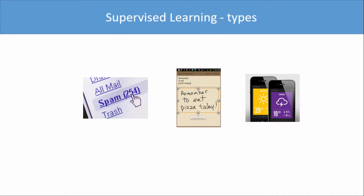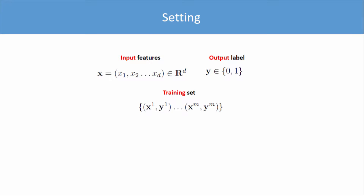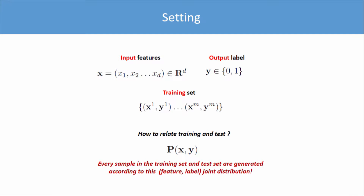To refresh: we had supervised learning with different types — binary, multi-class, regression, and so on. Let's go back to the standard binary classification setting where you have features and training sets with output labels. The way to relate training and test is that there is a joint probability distribution over x and y, which generates both the training set and the test set. So we want to somehow capture this joint distribution using the training data, and how you choose to model this joint distribution determines what our model will be.